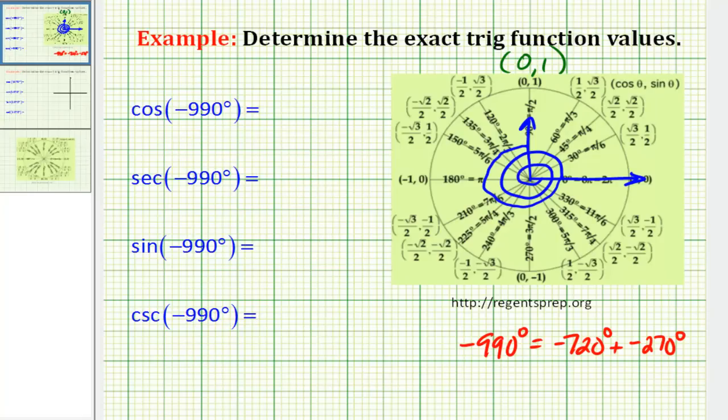Remember, on the unit circle, x is equal to cosine theta. So cosine theta would be equal to 0. And sine theta would be equal to the y coordinate, or 1.